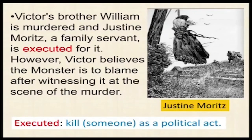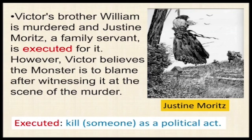Victor's brother William is murdered, and Justine Morris, a family servant, is executed for it. However, Victor believes the monster is to blame after witnessing it at the scene of the murder. William Frankenstein was murdered by the monster, but the circumstantial evidence was against Justine Morris, so she is given the death punishment. Victor, upon learning the truth, feels deep regret and moves to an isolated place in the glaciers.